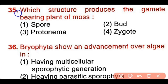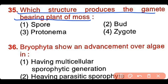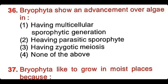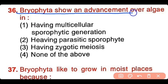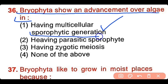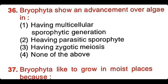Question number 35: Which structure produces the gamete-bearing plant of moss? Spore, bud, protonema, or zygote. The correct answer is option 2 — a bud is developed into the gamete-bearing plant of mosses. Question number 36: Bryophyta shows an advancement over algae in having multicellular sporophytic generation, having parasitic sporophytes, having zygotic meiosis, or none of the above. The correct answer is option 1. Bryophytes are more advanced than algae because bryophytes have a multicellular sporophytic generation.